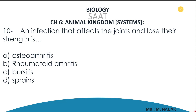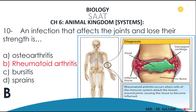Question number ten: an infection that affects the joints and causes them to lose their strength is A) osteoarthritis, B) rheumatoid arthritis, C) a process, D) strains. The correct answer is B — rheumatoid arthritis. Rheumatoid arthritis is an autoimmune disease in which the cells of the immune system attack your own body — specifically the tissue around the joints — causing that tissue to become inflamed and the cartilage to become damaged.